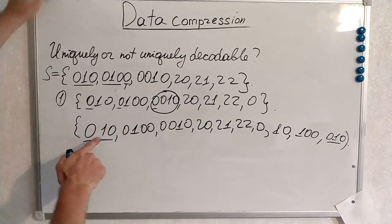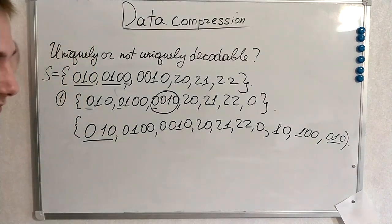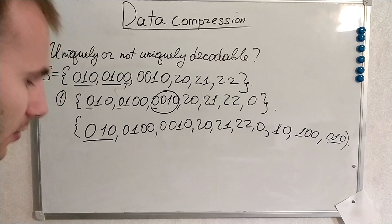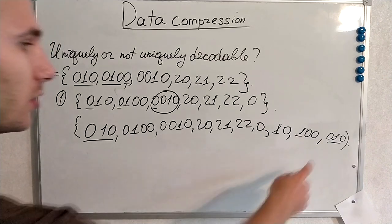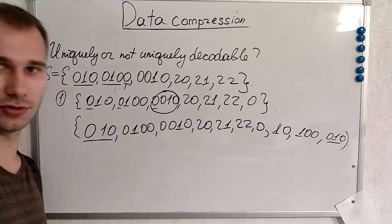And now we see that 0, 1, 0 and new formed dangling suffix, new formed member of our sequence is also 0, 1, 0. That means that our code is not uniquely decodable.